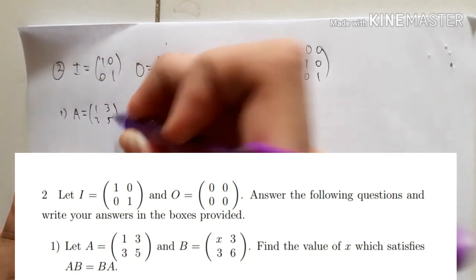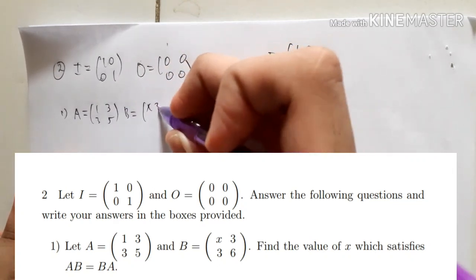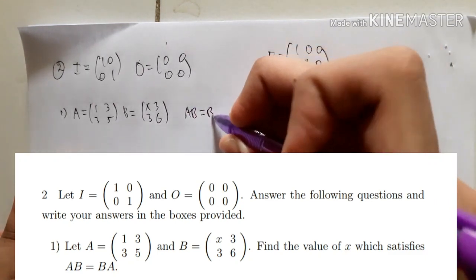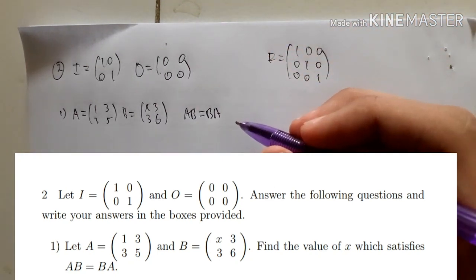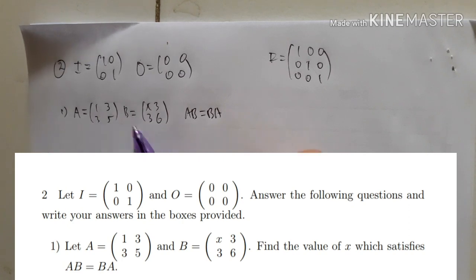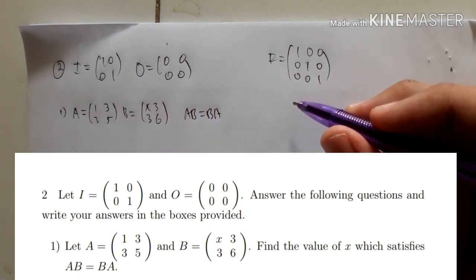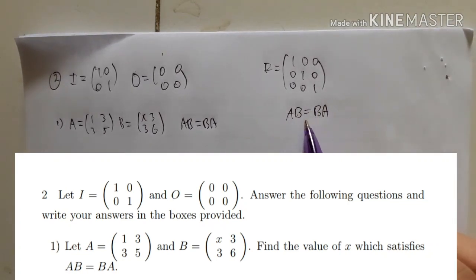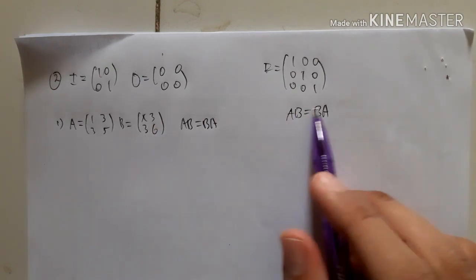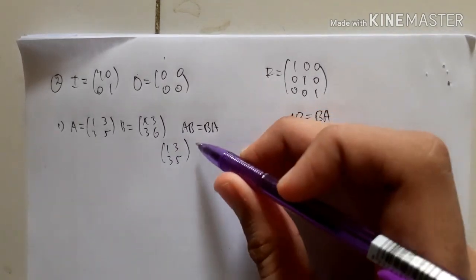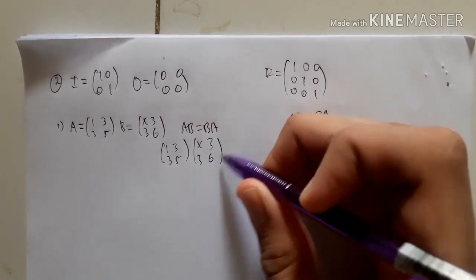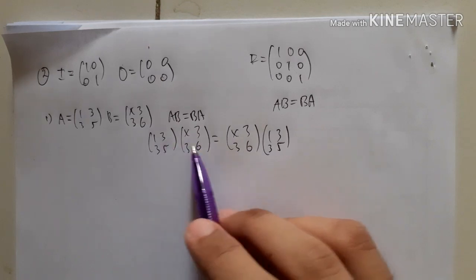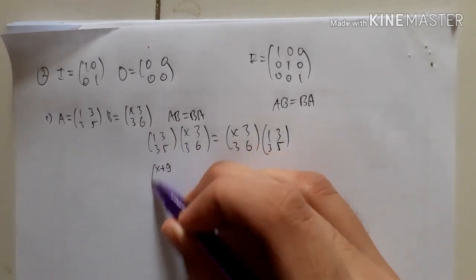For number one, matrix A is [1,3;3,5] and matrix B is [x,3;3,6]. Find the value of x that satisfies A×B = B×A. Note that matrix multiplication does not apply the commutative rule, so A×B and B×A are generally not equal. We must multiply them out. So 1 times x plus 3 times 3...